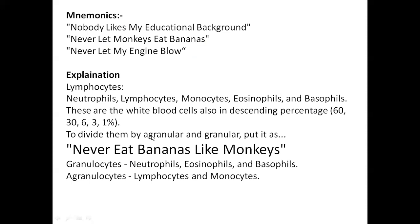Now, if you put the white blood cells into granular and agranular categories — white blood cells fall into two categories based on the presence of granules in their cytoplasm: granular or agranular. For granulocytes, use 'Never eat bananas': neutrophils, eosinophils, and basophils. Agranular cells are lymphocytes and monocytes — represented by 'like monkeys.'